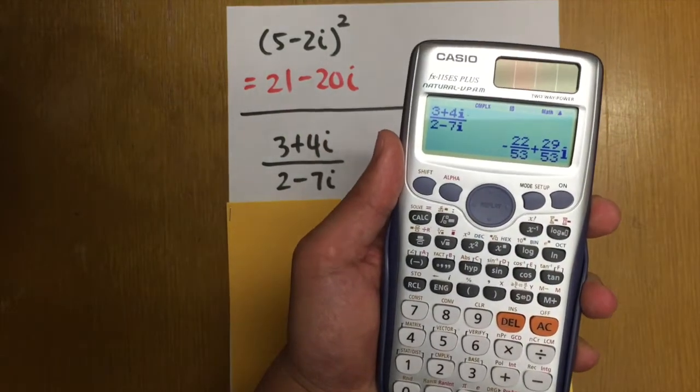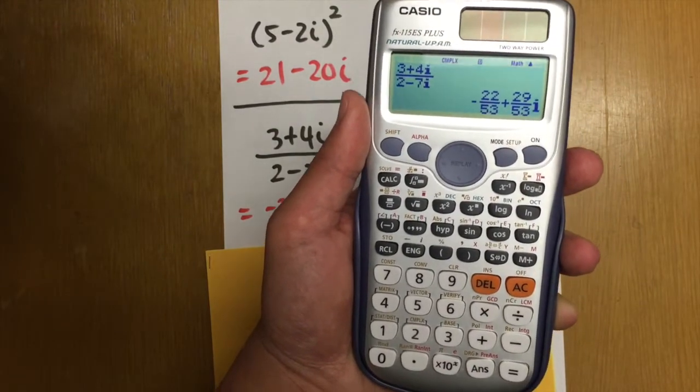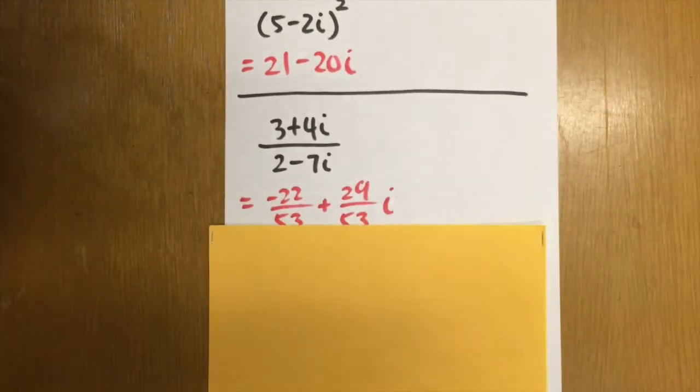And then this is in the standard form of the complex number. A plus bi. And that's pretty much the answer. Negative 22 over 53 plus 29 over 53i. And then that's all.